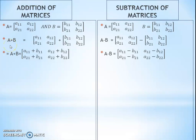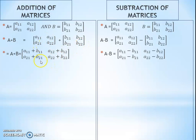We have to take the addition of two matrices. This is defined as A plus B. First matrix plus second matrix is equal to A11, A12, A21, A22 plus B11, B12, B21, B22. Be careful — both matrices must have the same order of rows and columns, that is 2 by 2. So A plus B equals A11+B11, A12+B12, A21+B21, A22+B22. We take the addition of corresponding elements at the same position in row and column.